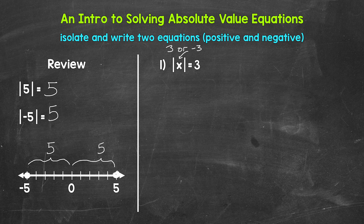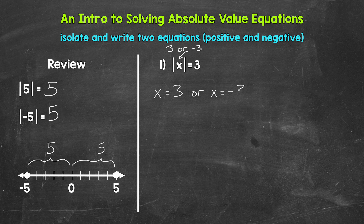The absolute value of three and the absolute value of negative three equal three. So when we have an absolute value equation, we write two equations — one equal to a positive and one equal to a negative. This gives us two solutions. For number one, x equals three or x equals negative three.